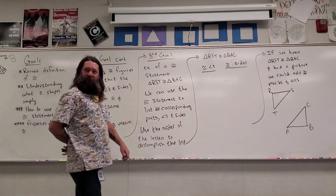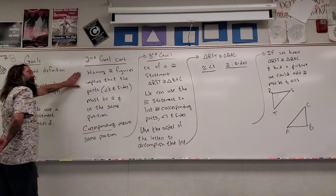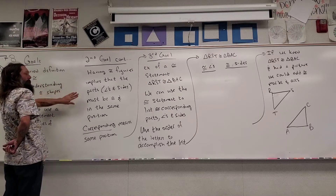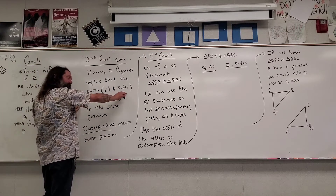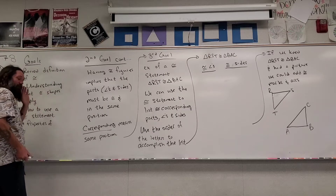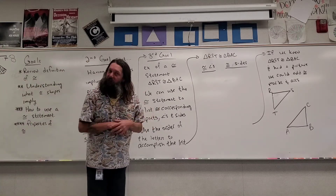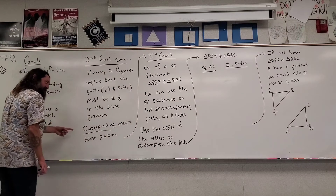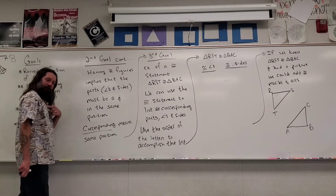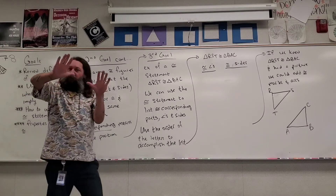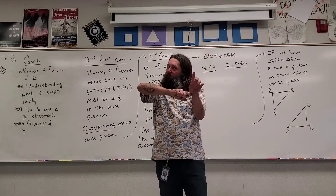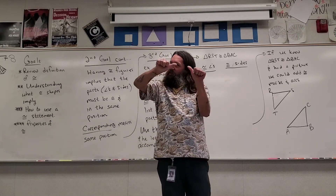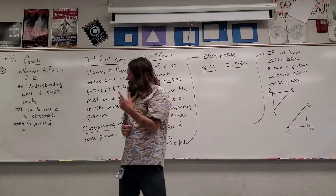Having congruent figures implies that the parts must be congruent and in the same position. Remember, the parts are the angles and the sides. Now, instead of saying 'the same position' over and over again, I'm going to replace that with the word 'corresponding.' Corresponding means in the same position — your thumbs are corresponding because they're next to the index fingers and your wrists. Now let's move on to our third goal: how to use a congruent statement.